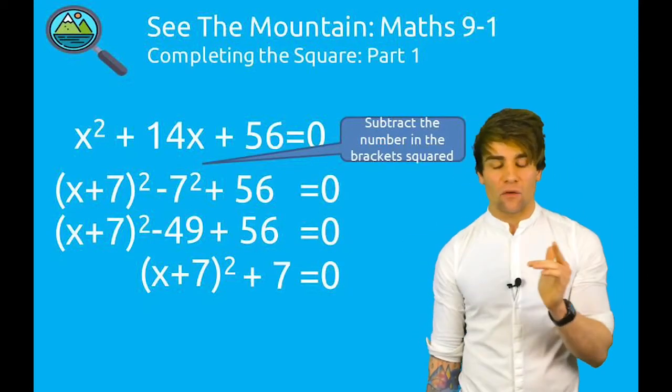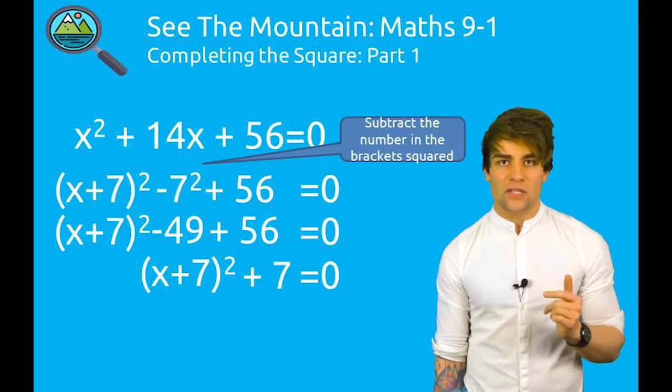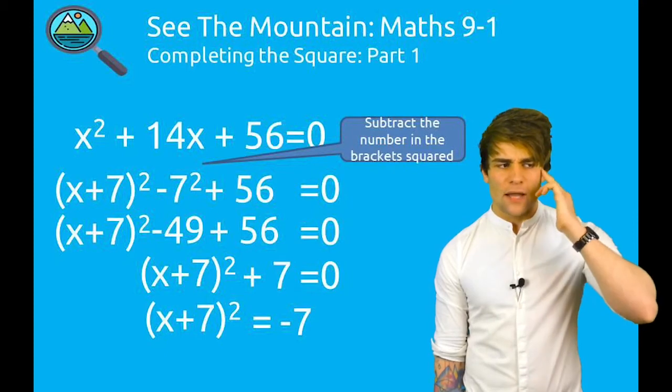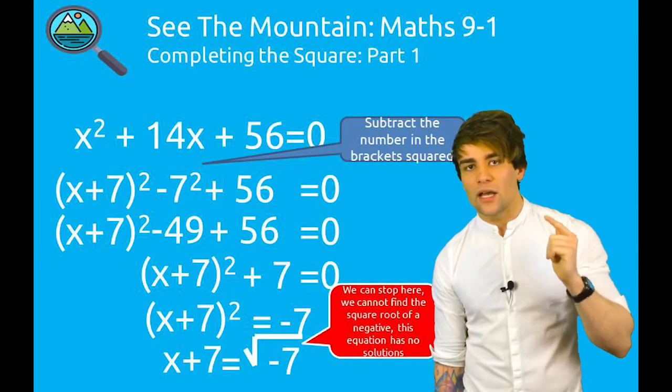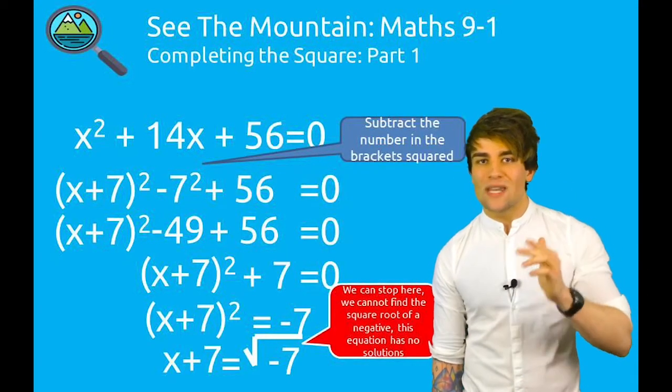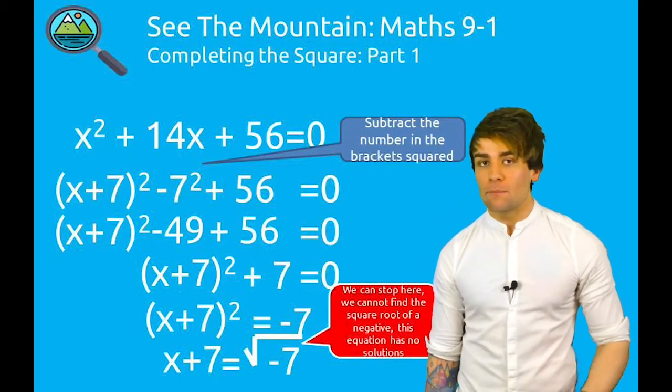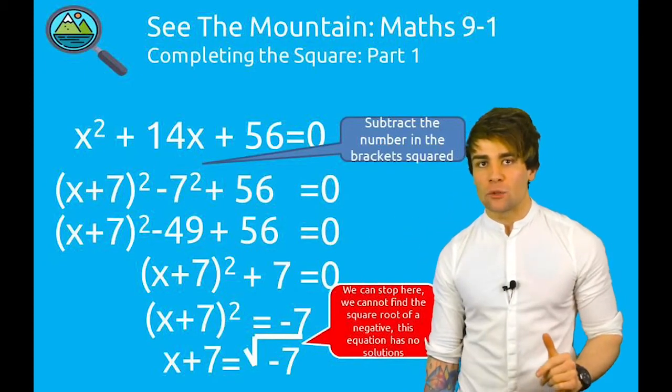Let's start solving now for x. We take the 7 across to the other side. -7. We now square root -7. Wait, we can't do that. You don't square root minus numbers. So we can literally stop there. x has no solutions because it would have meant us square rooting a minus number.